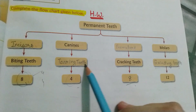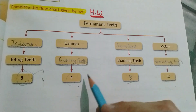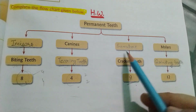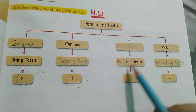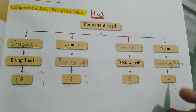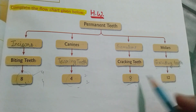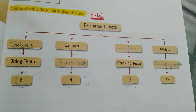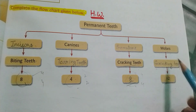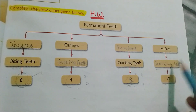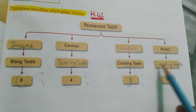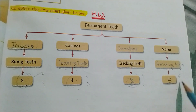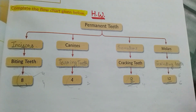Canines — tearing teeth hote hain, tear karne ke liye food ko kaam aate hain. Two in the upper jaw, two in the lower jaw. Premolar — cracking teeth, todne aur break karne ke liye use hote hain. Four in the upper jaw, four in the lower jaw, total eight. Molar kya hote hain? Grinding teeth — grind karne ke liye food ko. That are twelve — six in the upper jaw, six in the lower jaw.